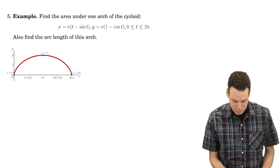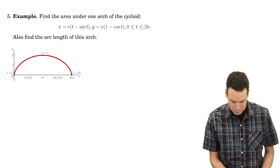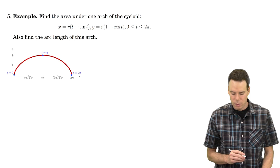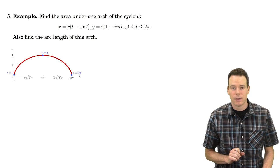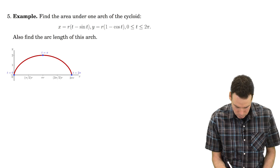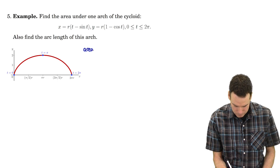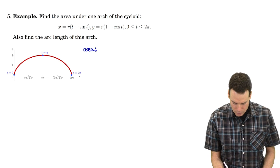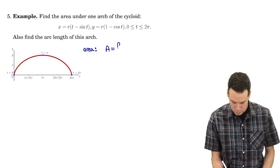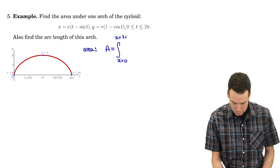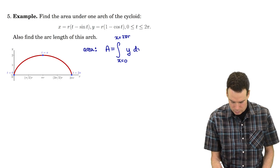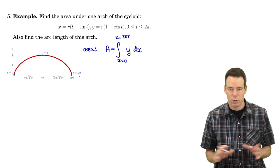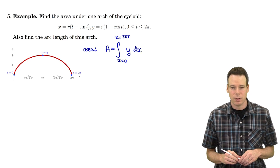We'll revisit the motivating problem we had at the beginning of this section: find the area under one arch of the cycloid and also find the arc length of this arch. Let's look at the area. It's going to be the integral from x equals 0 to x equals 2πr of the heights dx — our usual area formula in terms of an integral.